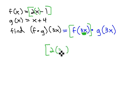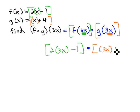So f is 2 times the variable, which gets replaced with 3x minus 1, times the g(x) function. But in g(x), we're going to replace the x with 3x. So here's the g function, x + 4, but that x is going to be replaced with 3x. So now we have 3x + 4.